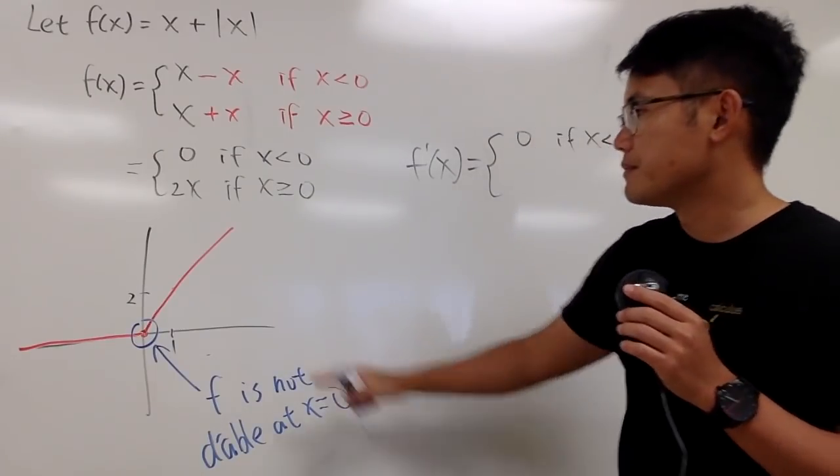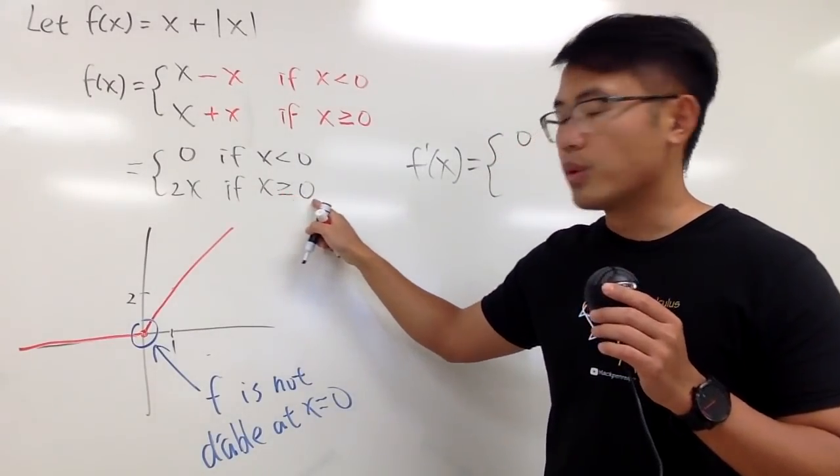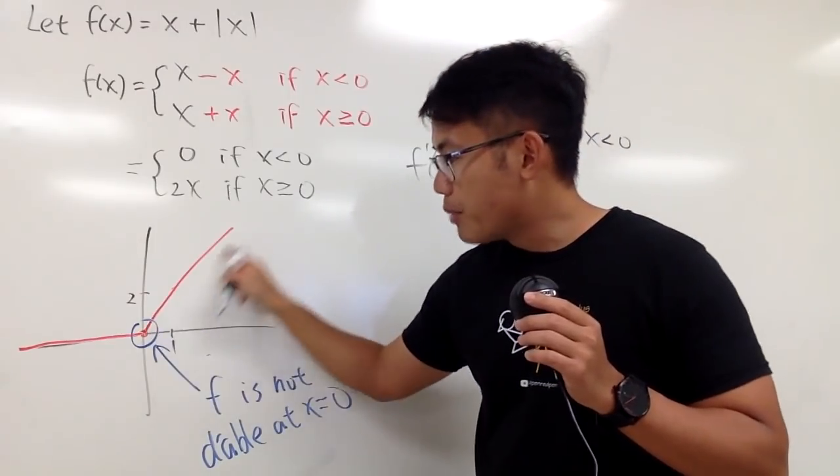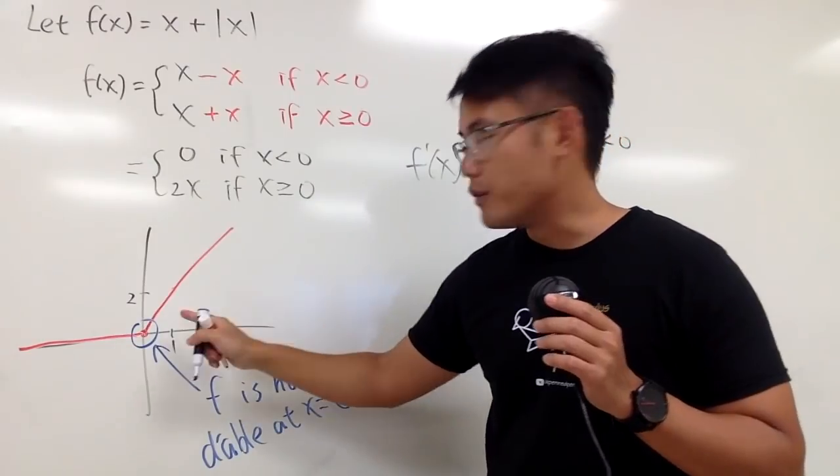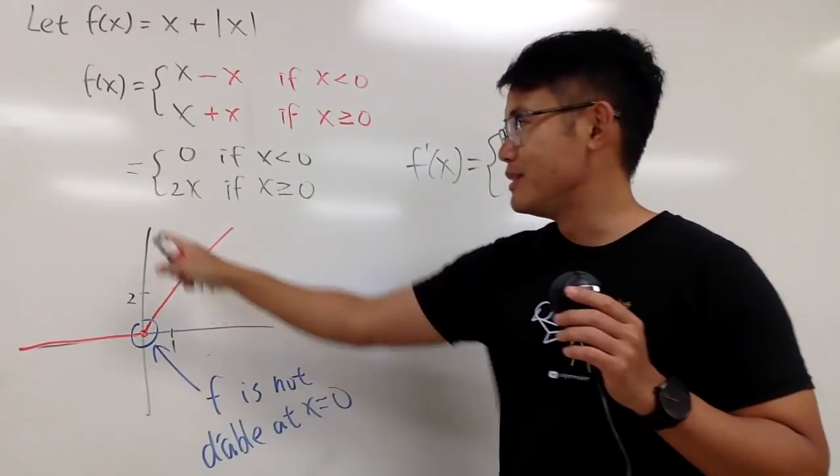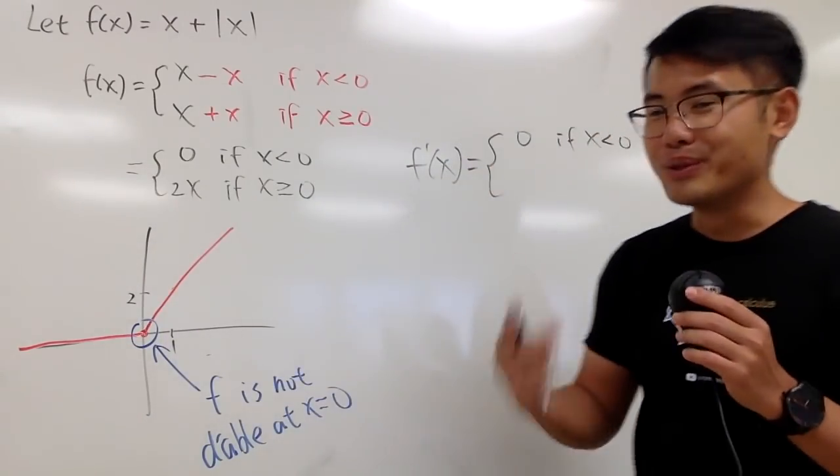However, when x is greater than or equal to 0, this part, you know this is just a straight line. The slope of the straight line is this number. So, we have 2, right?